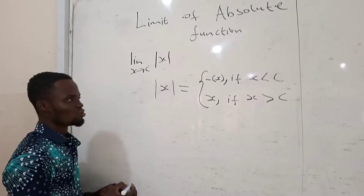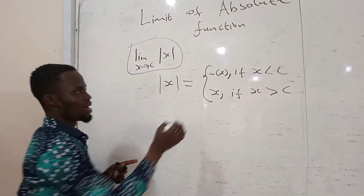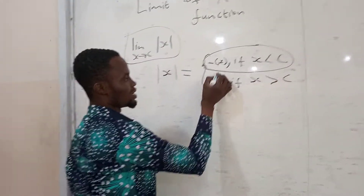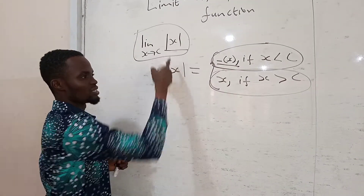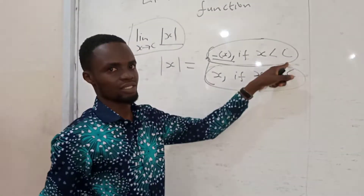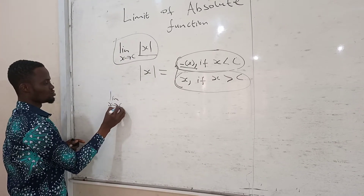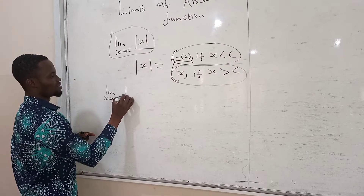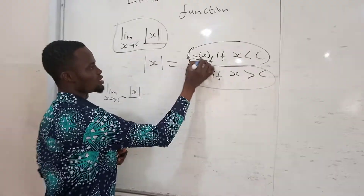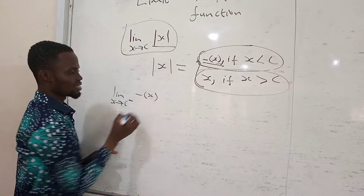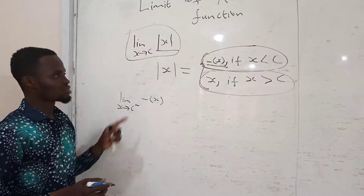Where your limit is approaching. So for this limit, if I want to check whether this limit exists, I do the left-hand side and the right-hand side. This is the right-hand side, this is the left-hand side. In place of this, I substitute into the equation, then I apply the condition on it.